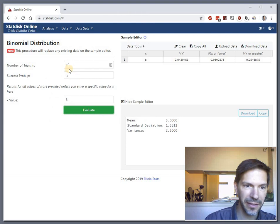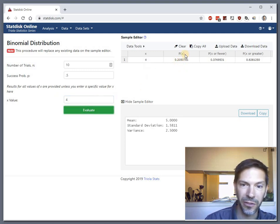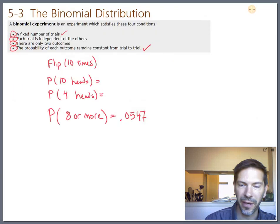So let's see, back to StatDisk, 10 trials, 50% chance of success and 4 successes. And the exact probability there, so just of 4, is 0.205. Yeah, I'll just go with that, 0.205.